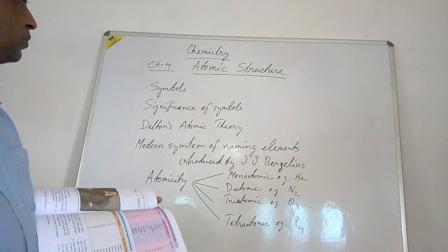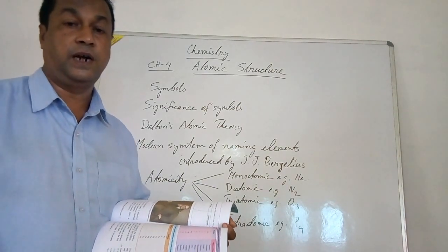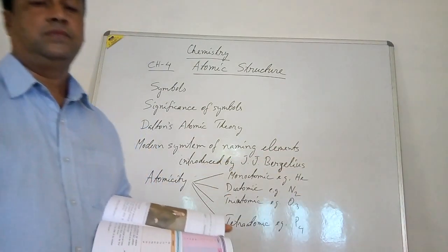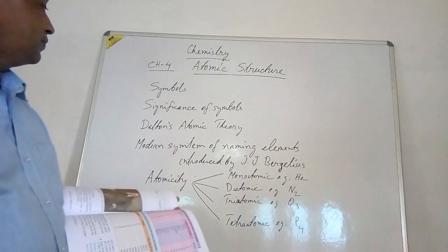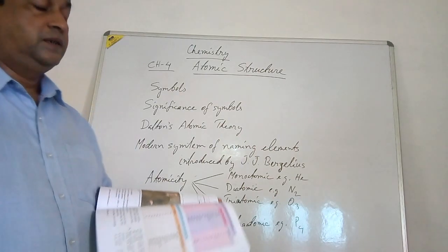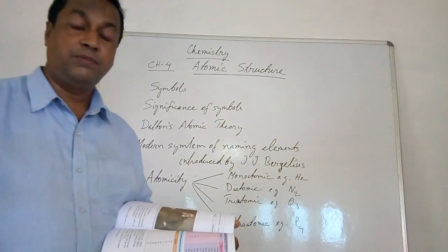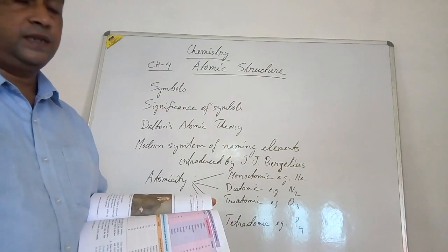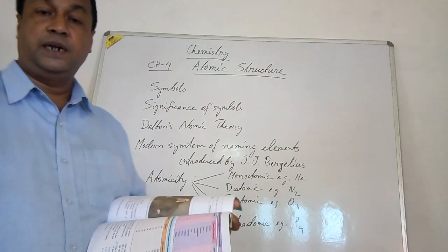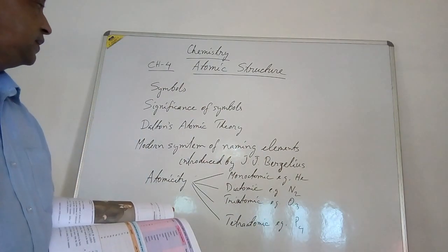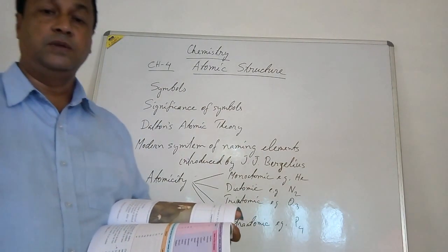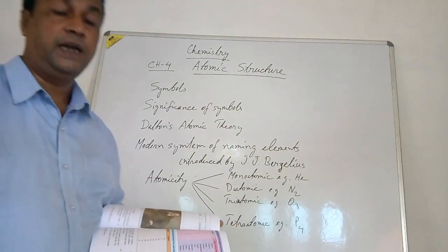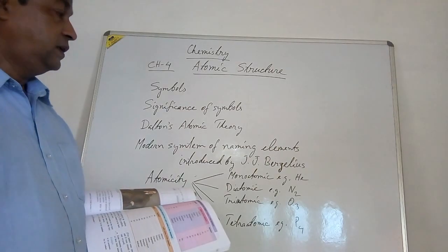This system was proposed by Sir John Dalton, a scientist. According to Dalton's atomic theory, matter is made up of indivisible small particles known as atoms, and atoms cannot be divided. Atoms of the same element are the same, while atoms of different elements differ in properties.